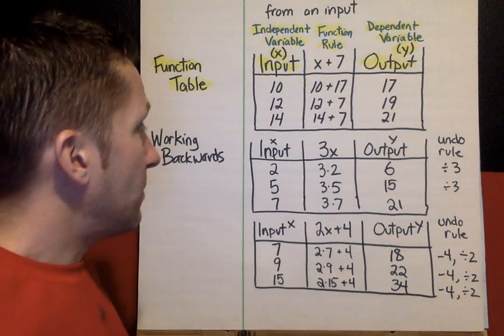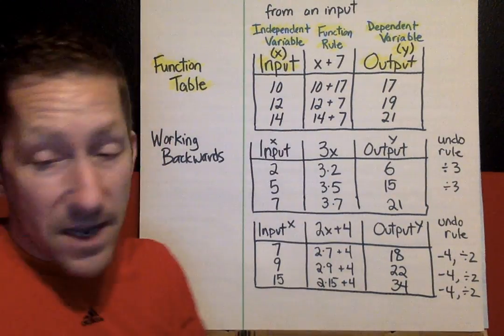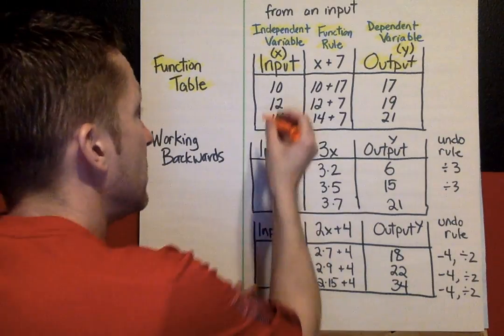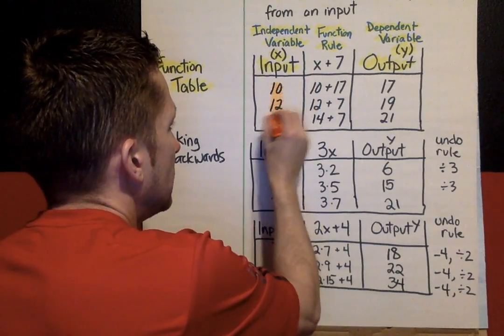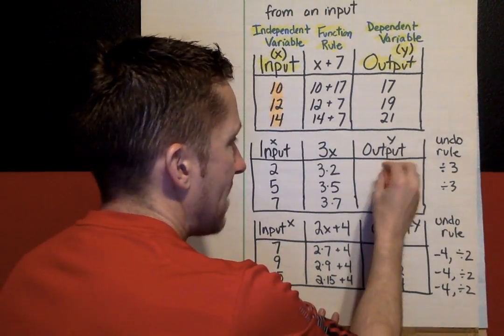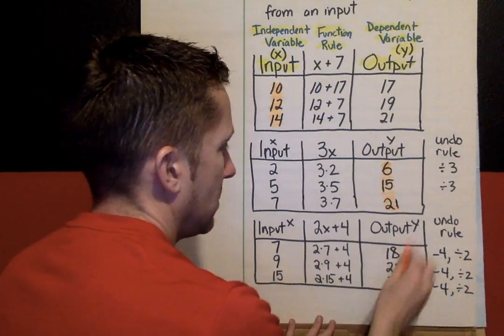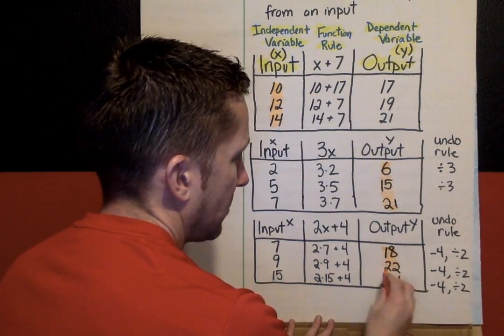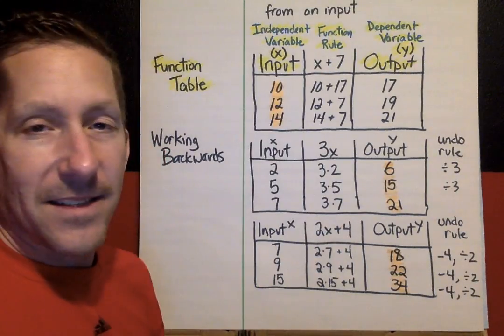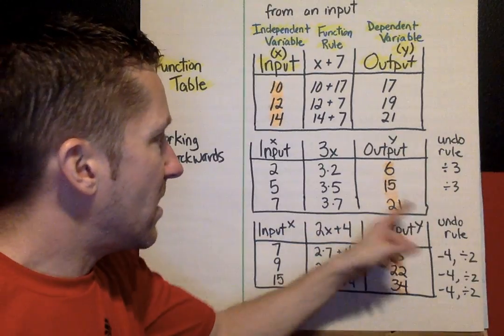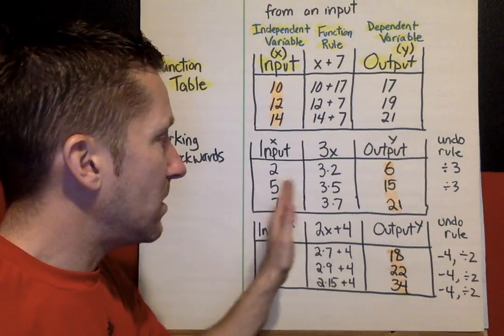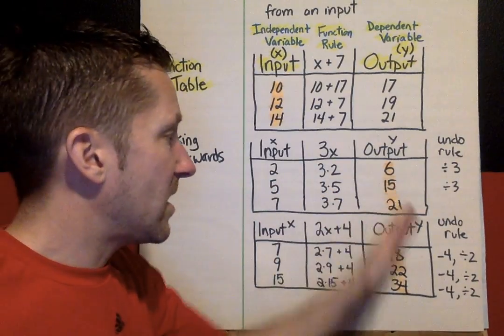On some of your practice today, you will know the input. If you know the input, you're just plugging it into the rule and seeing what your output is. If you know the output to start, like on these two that we walked through, you're going to have to try either the guess and check strategy or you can try and undo the rule. But make sure you're testing it when you think you have an input. Make sure you're testing it into the rule and that you're getting that same output.